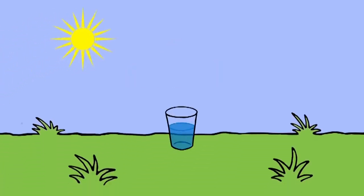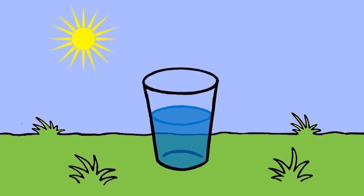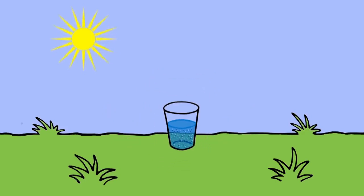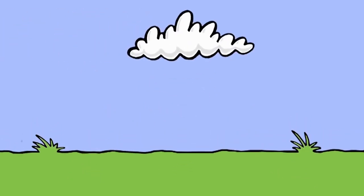You can see this effect for yourself. Take a cold glass of water and place it outside. Water vapor will condense on the outside of the glass. The water does not leak through. It came from the warm air and condensed on the outside of the cold glass. Once all of the water is collected in the cloud, you know what happens next.